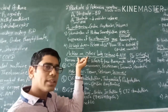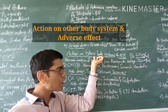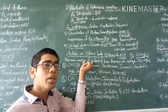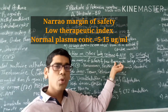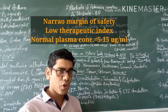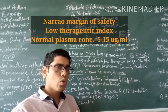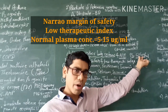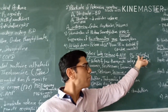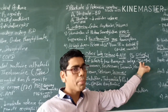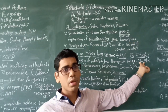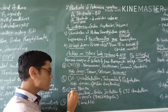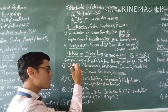The actions of theophylline on other body systems are also responsible for its adverse effects. Theophylline has a very narrow margin of safety — a low therapeutic index. When its plasma concentration is between 5 to 15 micrograms per ml, it is safe. As concentration increases above 15 micrograms per ml, especially above 20 micrograms per ml, side effects may appear; at 30 to 35 micrograms per ml, toxicity can appear. Side effects are mainly limited to the CNS, CVS, and GIT.